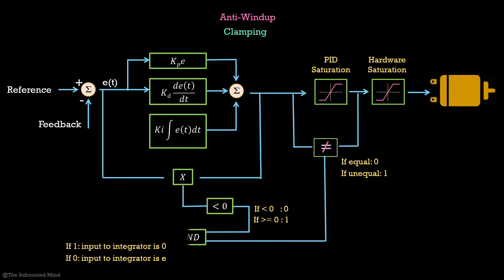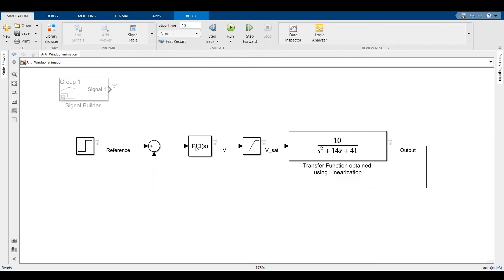Finally, we pass both these results to an AND gate and depending on the output of this gate, we decide whether integrator should integrate or not. Let us see this in action to get a better understanding.